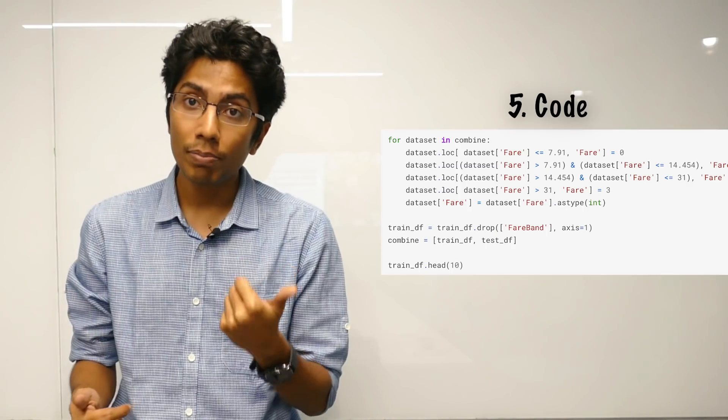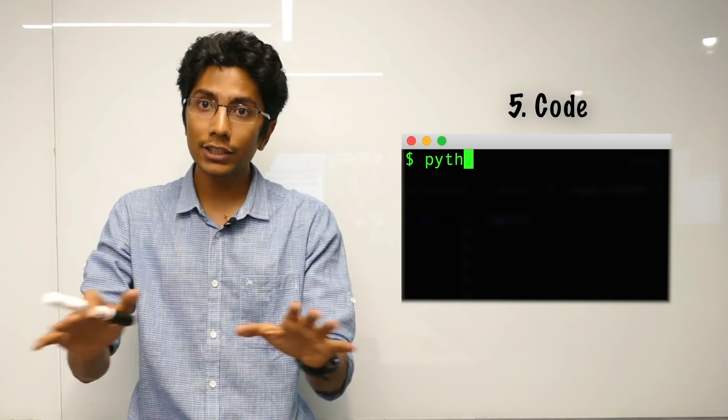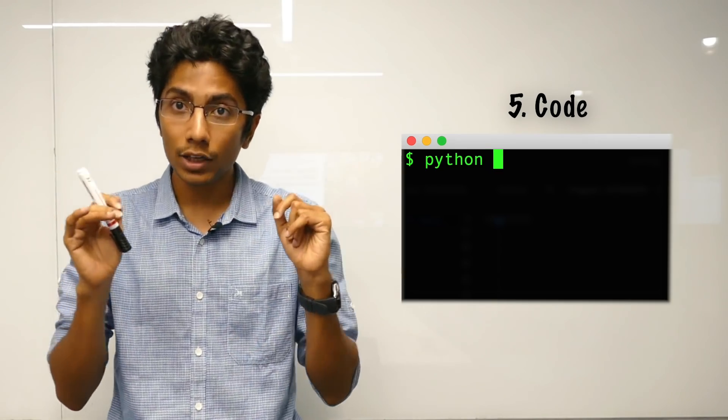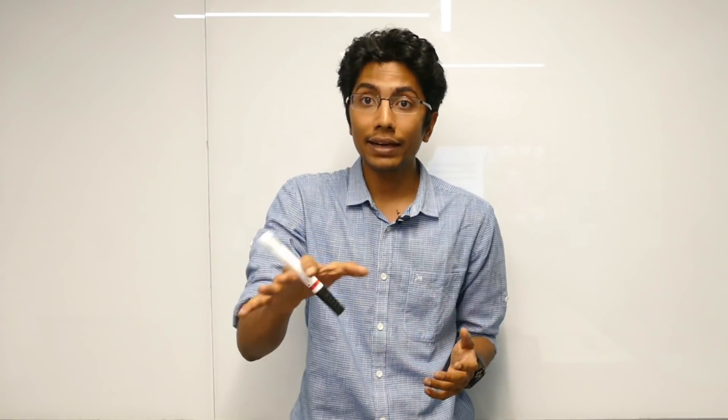Point number five, which is probably the most important — and although people know it, they don't do it — is coding. You need to implement machine learning algorithms to understand them in depth. Unless you start coding on the terminal, you won't be able to play around with that kind of model, and you won't get the confidence of actually having programmed that machine learning code.